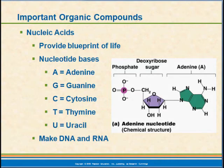We've talked about our other organic compounds, which included the lipids, the carbohydrates, and the proteins. The last two that we're going to talk about are the nucleic acids and ATP. We're just going to give a brief overview of the nucleic acids right now. We'll have a further discussion in terms of how DNA and RNA are involved in protein synthesis a little bit later on.